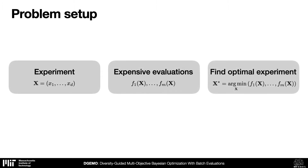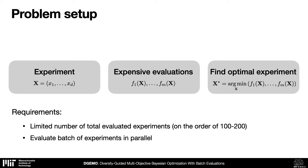The problem we are addressing in this work is the following. Imagine you have an experimental setup with d-design parameters and you're trying to find an optimal combination of these parameters that will satisfy multiple objectives simultaneously. But each experiment is expensive to evaluate, so you have to be very careful with which experiments you want to test, and your total number of experiments can be limited to one or two hundreds.